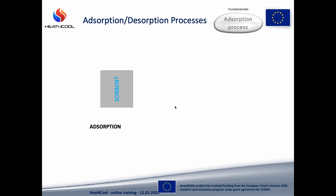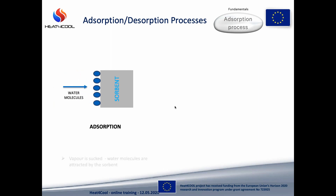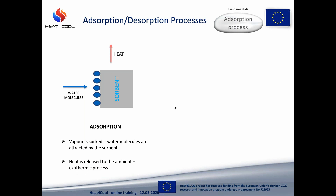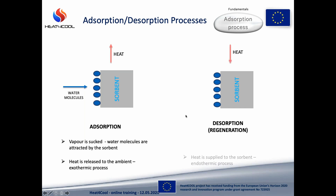Let's start with adsorption. During this process the sorbent attracts the water molecules — in other words it sucks in the vapour. At the same time heat is released to the ambient, therefore we call this process exothermic. After some time the sorbent gets saturated with water, and if we want to dry it again we have to force the water molecules to leave. We can do it by heating up the sorbent, and this process is called desorption or regeneration. Because we are adding heat, we call this process endothermic.